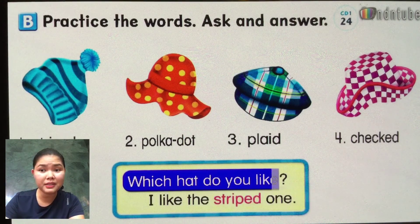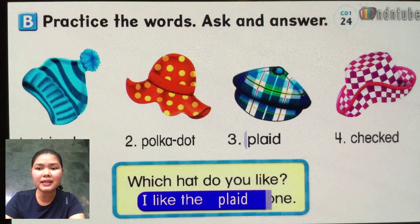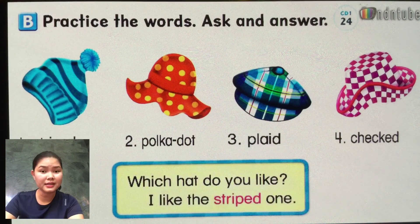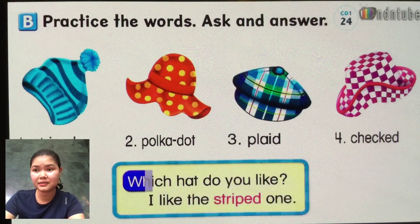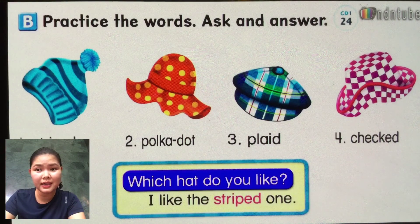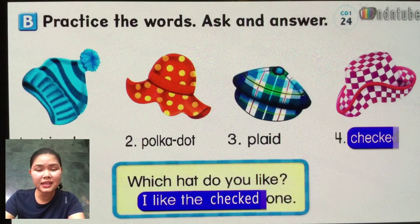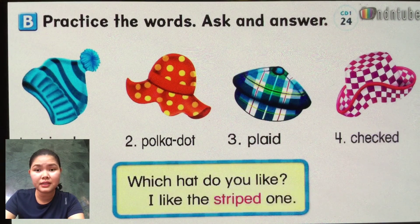Number three. Which hat do you like? I like the striped one. And last one, number four. Check it. Which hat do you like? I like the striped one. Okay, now we're done for this. Again, you can stop this and then repeat again.